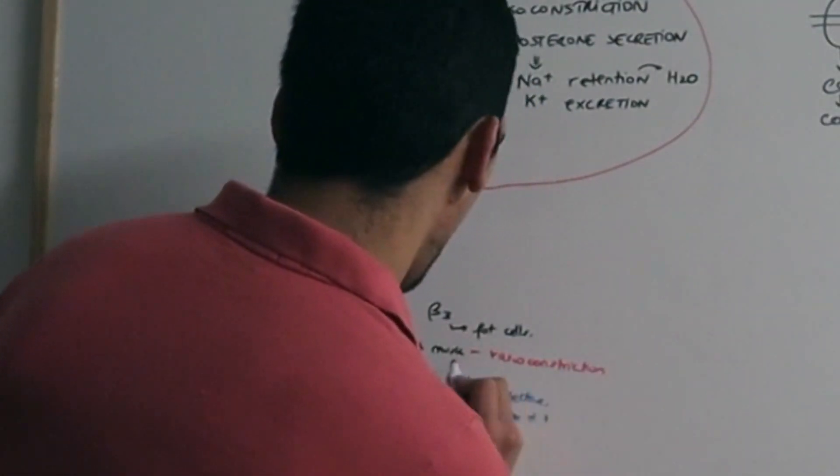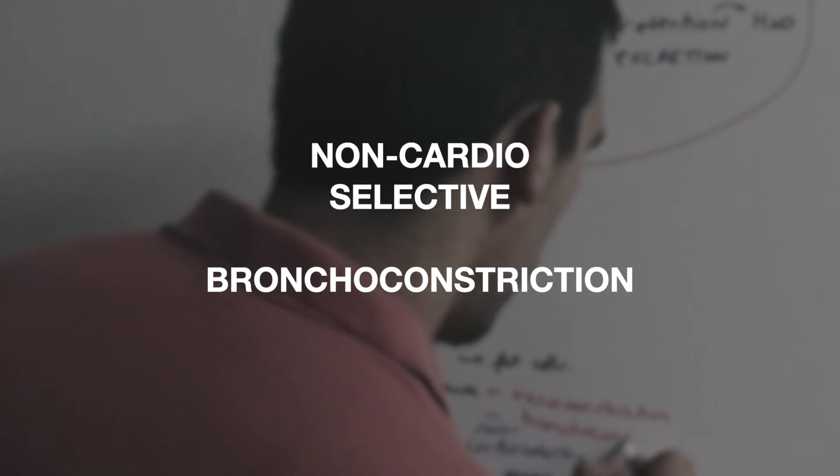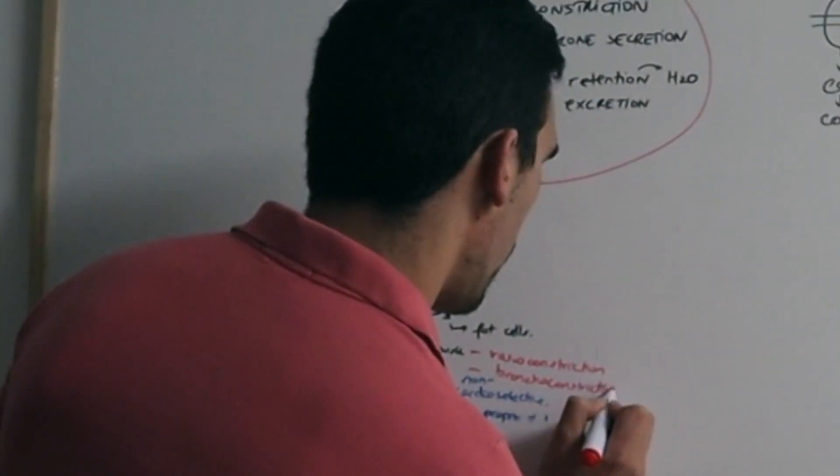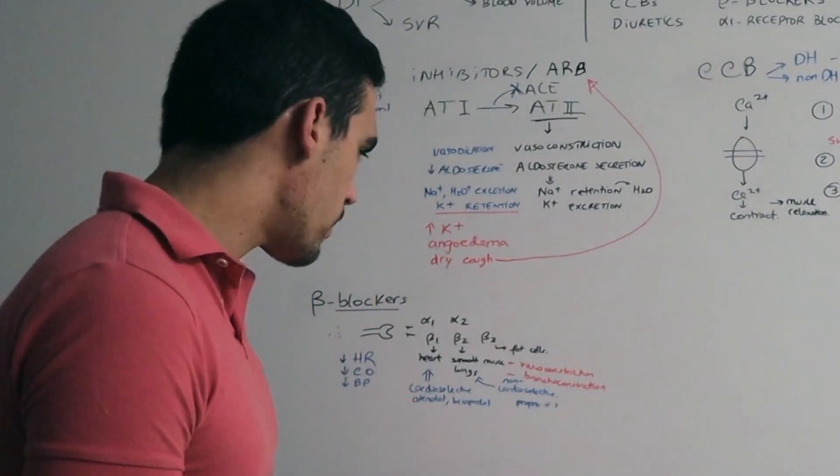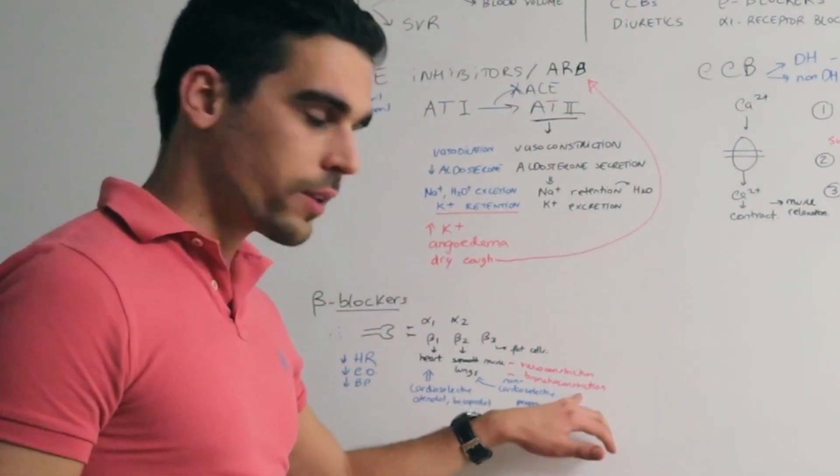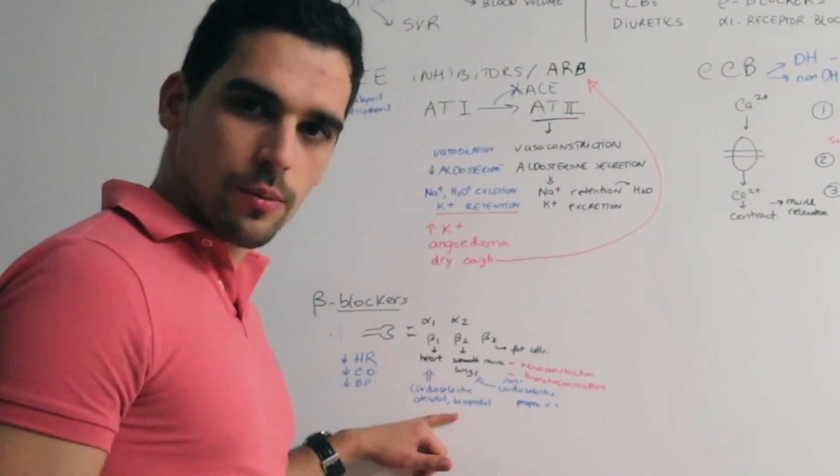If they act on the lungs, they can cause bronchoconstriction. So if we have a patient with asthma or COPD, we don't want this to happen, so we'll give them preferably a cardioselective beta blocker.